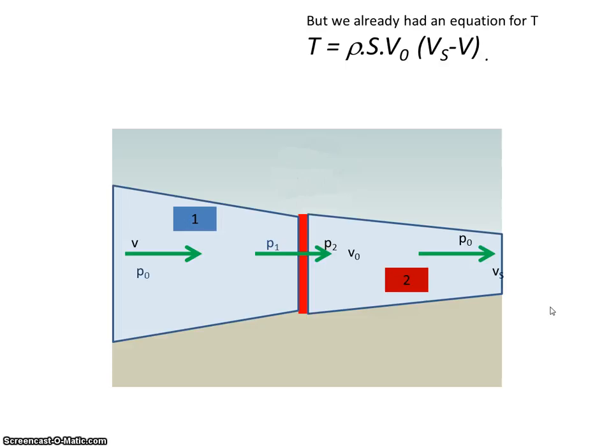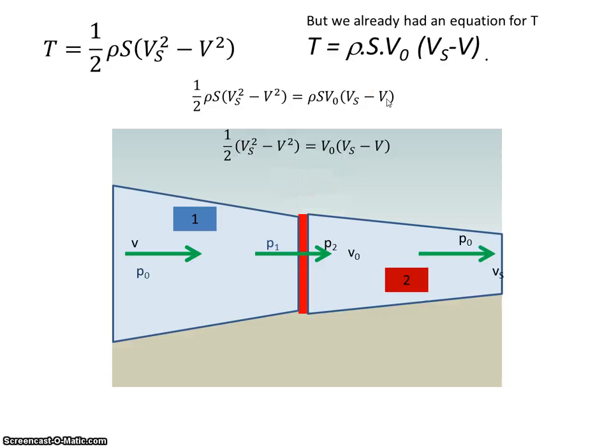We already had an equation for T. We said thrust was equal to mass by the acceleration, the difference between vₛ and v. So I can say these two are equal: ½ρS(vₛ² minus v²) is equal to ρSv₀(vₛ minus v). So I'm left with this equation.